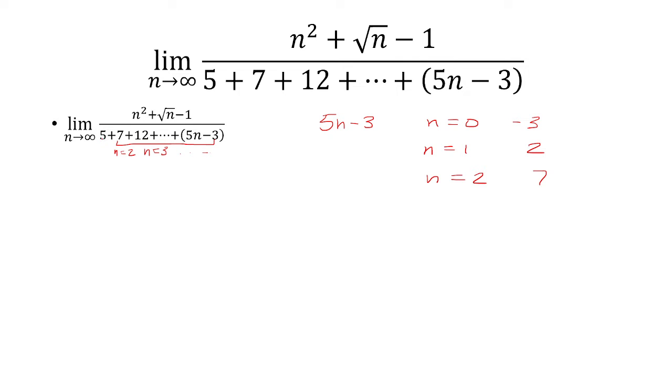What we need to do is take 5 plus the sum from k equals 2 to n of 5k minus 3. So that's what this sum is on the denominator. Instead of k I just used i here, it doesn't really matter, and we're going all the way up to n. You plug in n for i to get 5n minus 3.